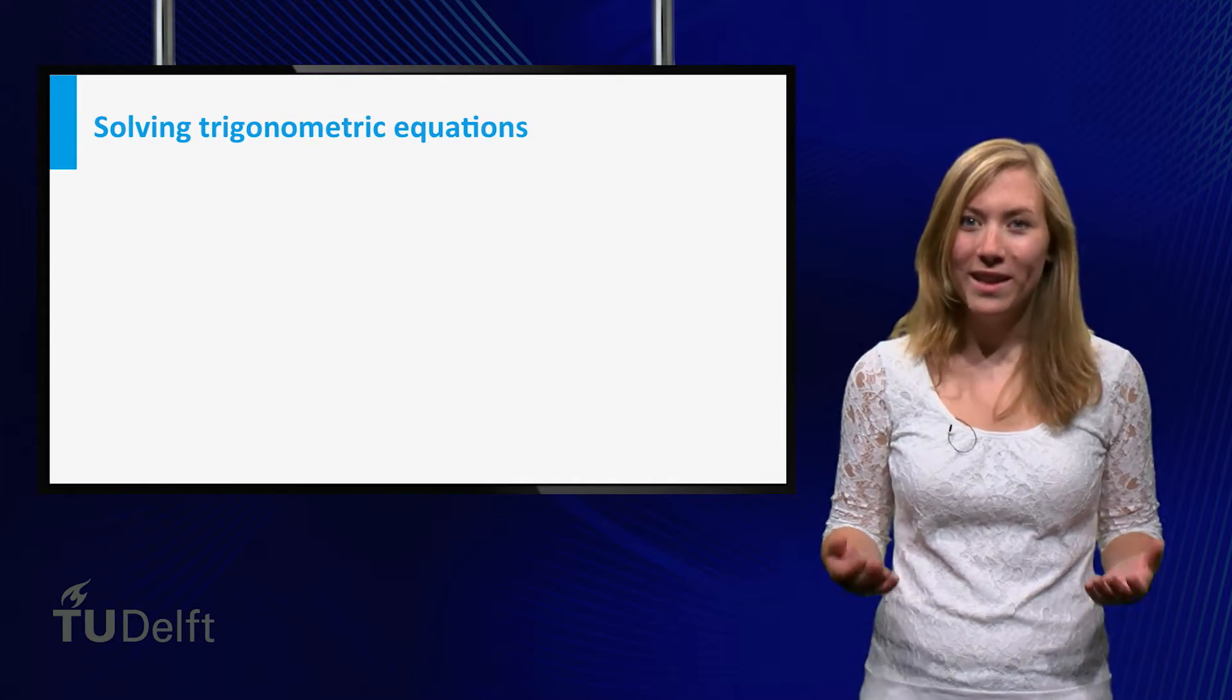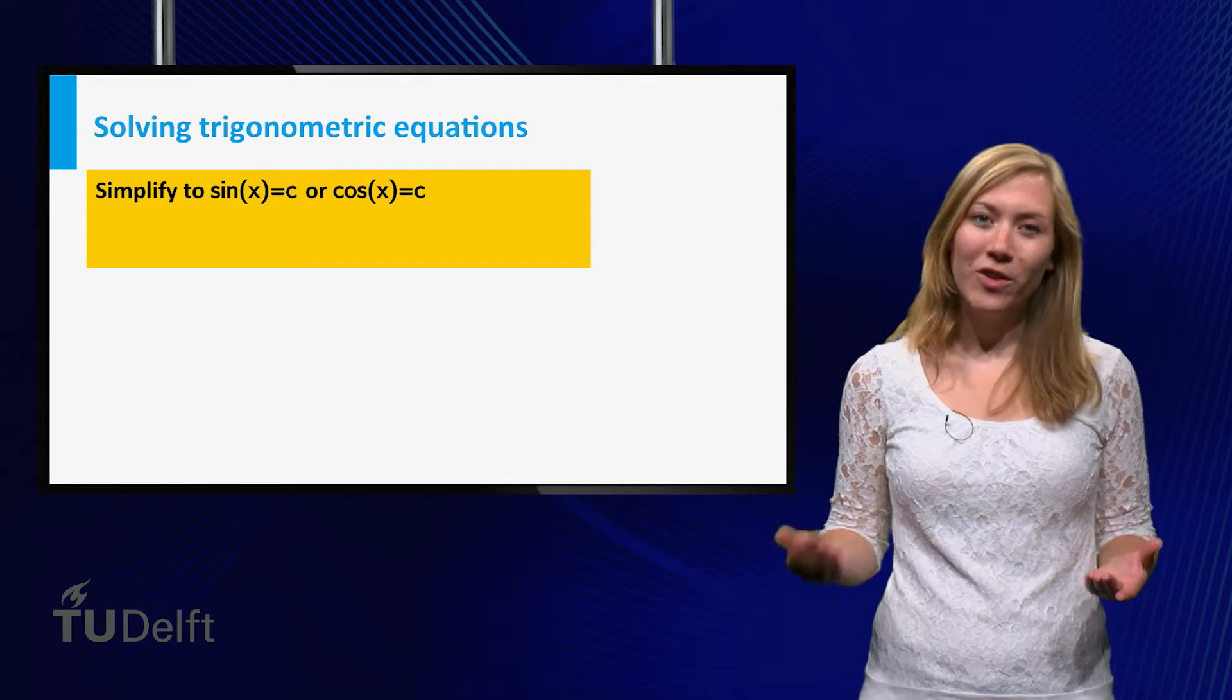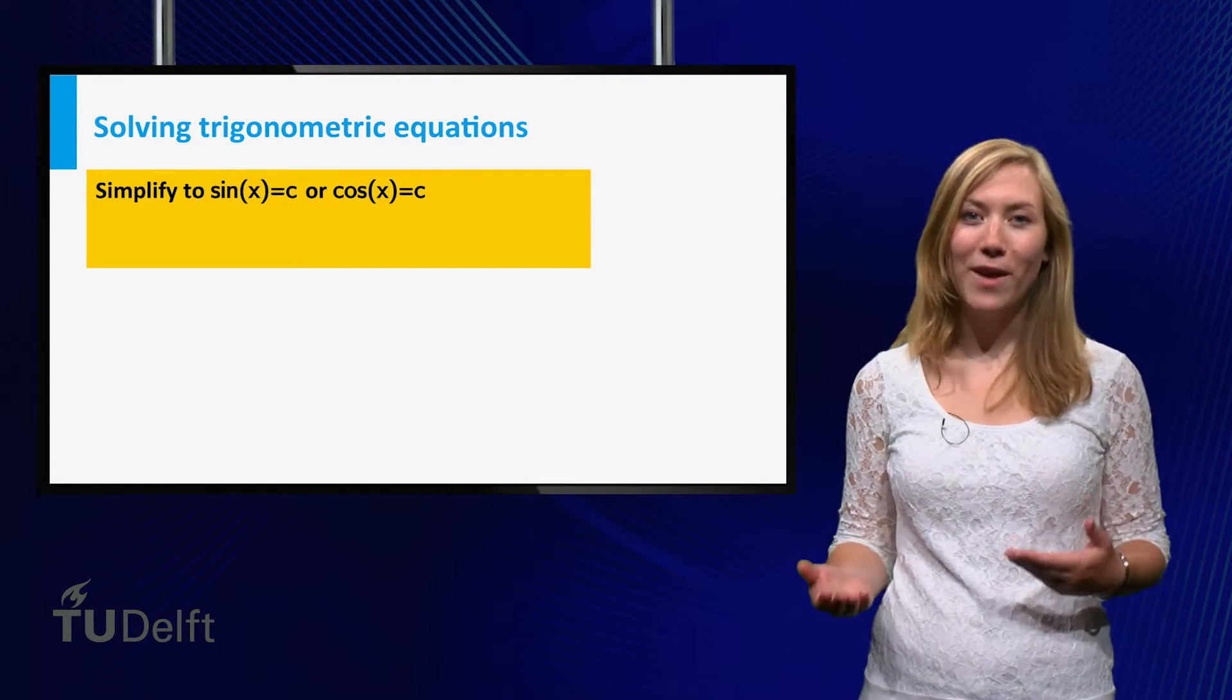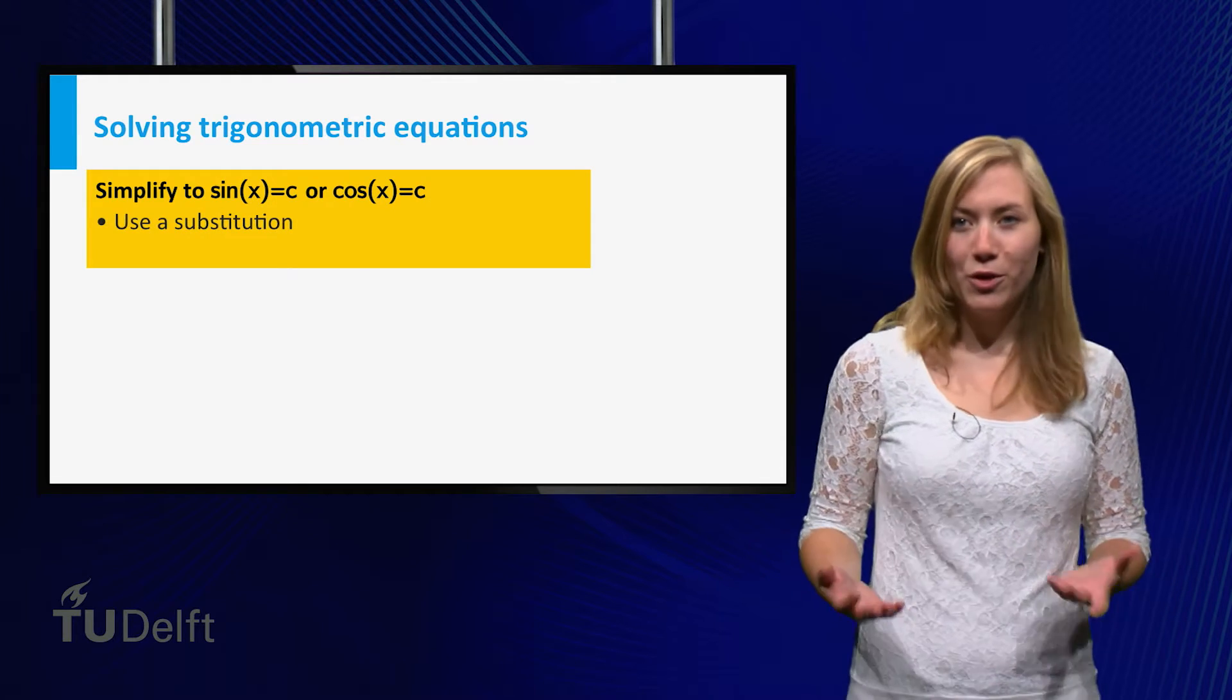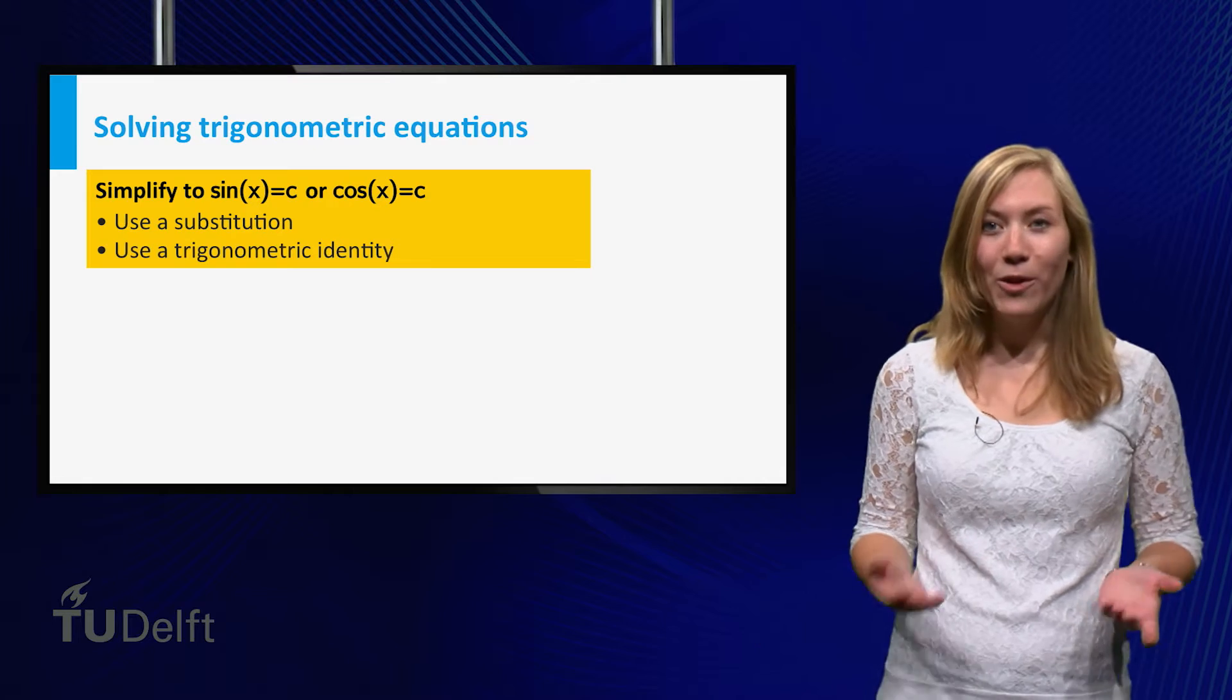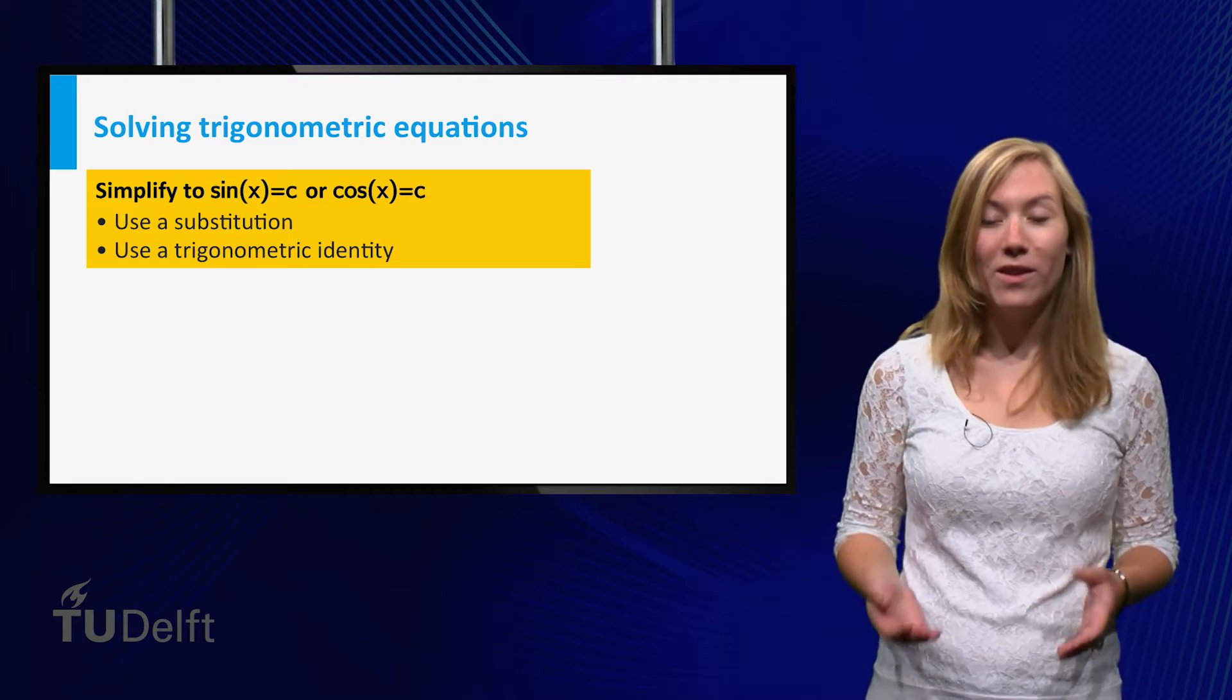The first topic of this week is equations involving trigonometric functions. First, you try to simplify such an equation to an equation of the form sin(x) = c or cos(x) = c. To do this, use an appropriate substitution or trigonometric identities like double angle formulas, addition formulas, or sin²(x) + cos²(x) = 1.